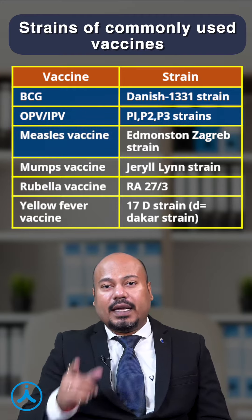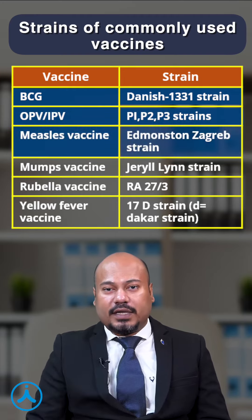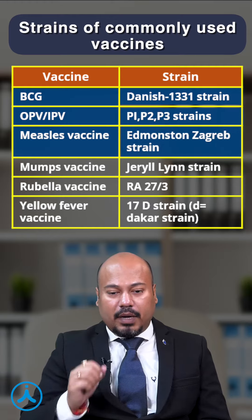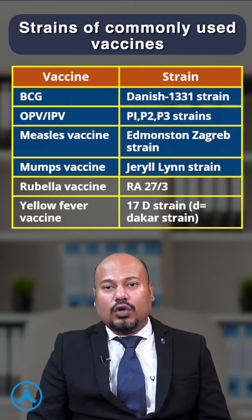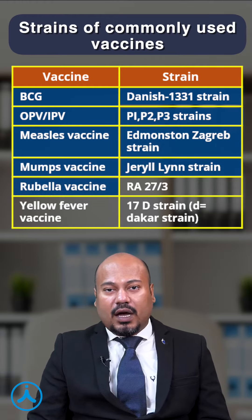The measles vaccine uses the Edmonstone-Zagreb strain. The mumps vaccine uses the Jeryl Lynn strain. The rubella vaccine uses the RA 27/3 strain.